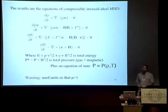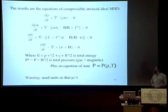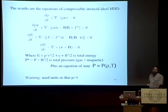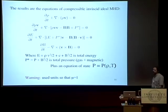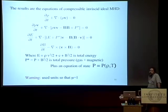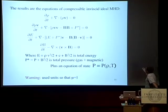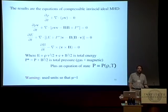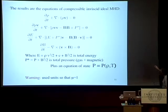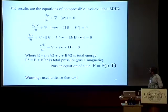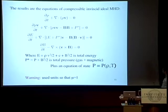So these are the equations of compressible, inviscid, ideal MHD — ideal because conductivity is assumed infinite, suitable for a fully ionized plasma; inviscid because there's no explicit Navier-Stokes viscosity; compressible because we made no incompressibility assumption. Cataloged: continuity equation, momentum equation, energy equation, and induction equation, with total energy E and total pressure P* = gas pressure plus magnetic pressure. Note I'm sloppy with units — I've written these in units where μ is one; God's units are Gaussian units, which introduces four π's that can be buried into the magnetic field definition.